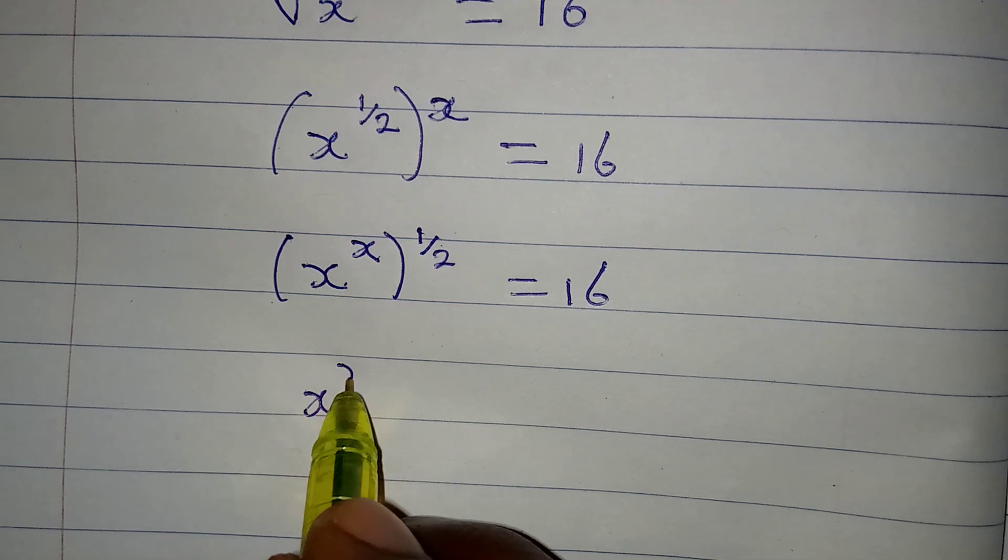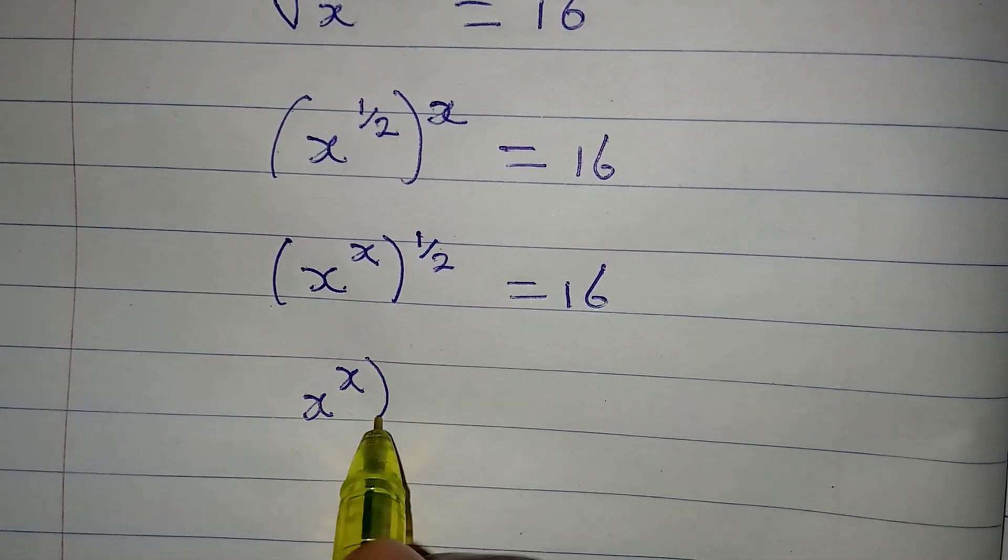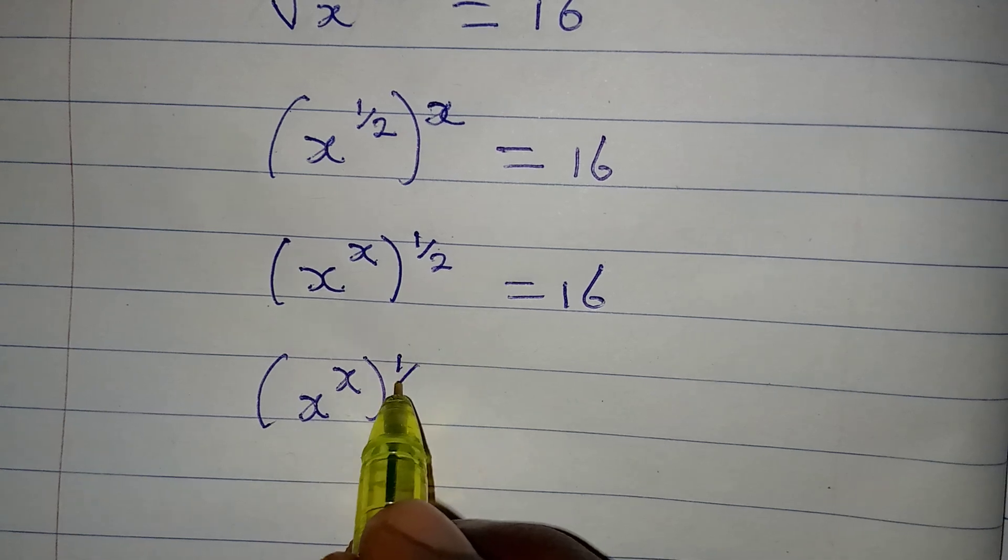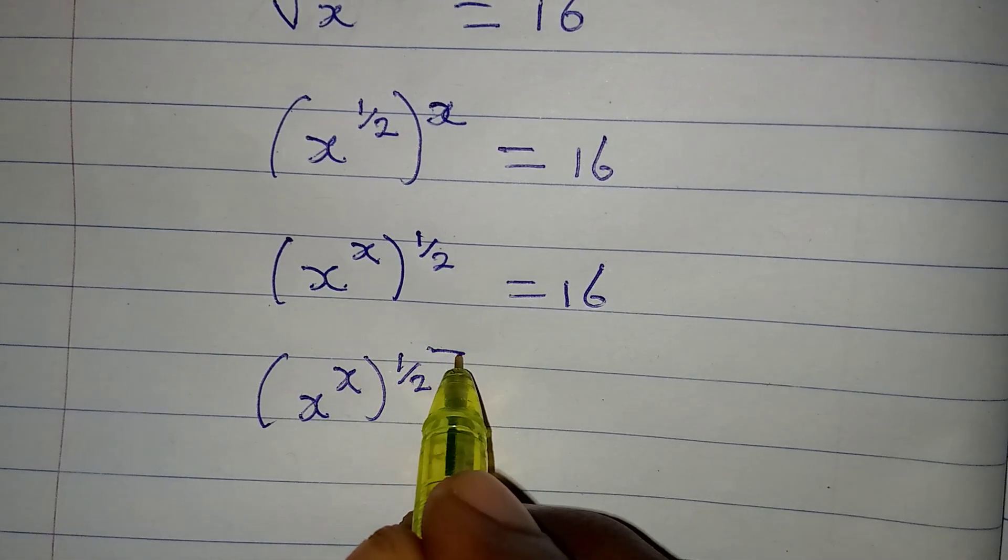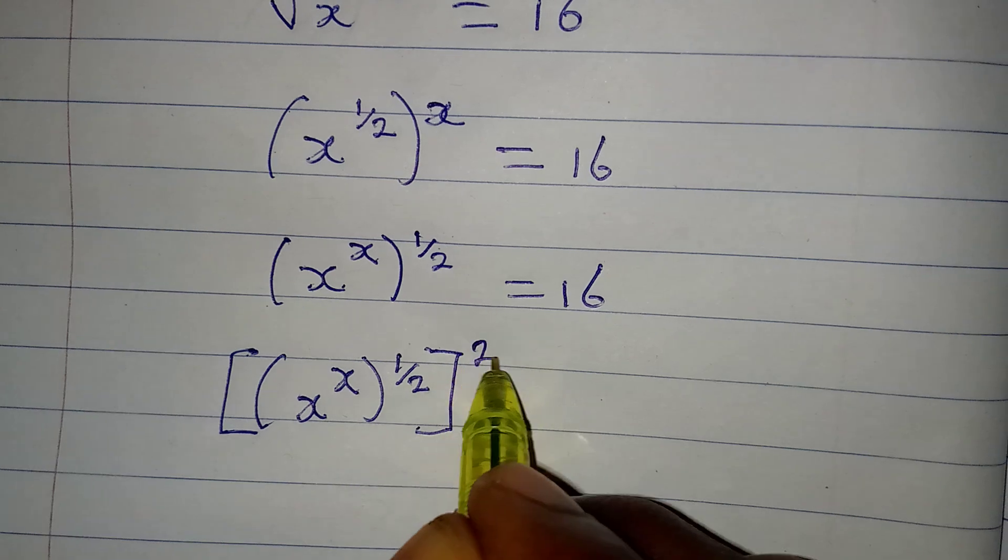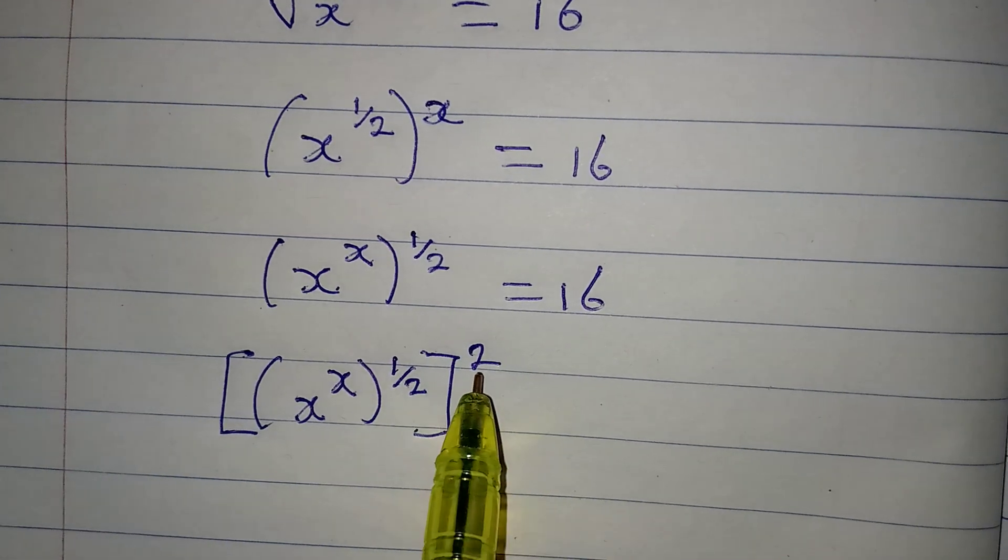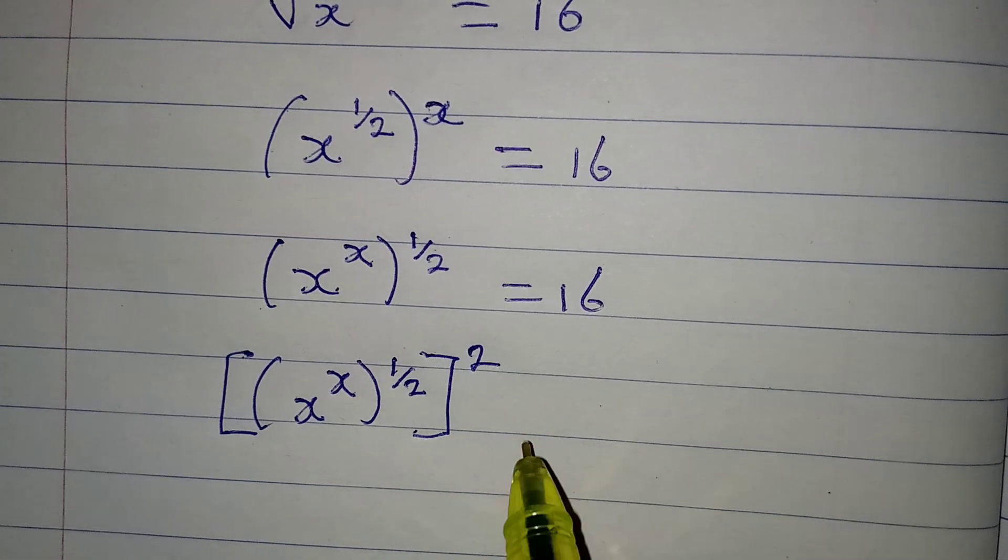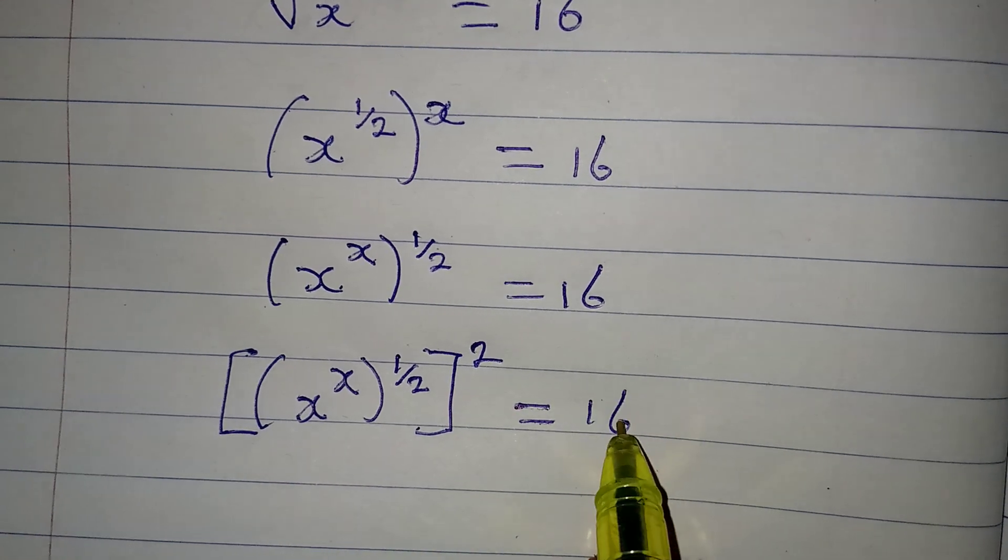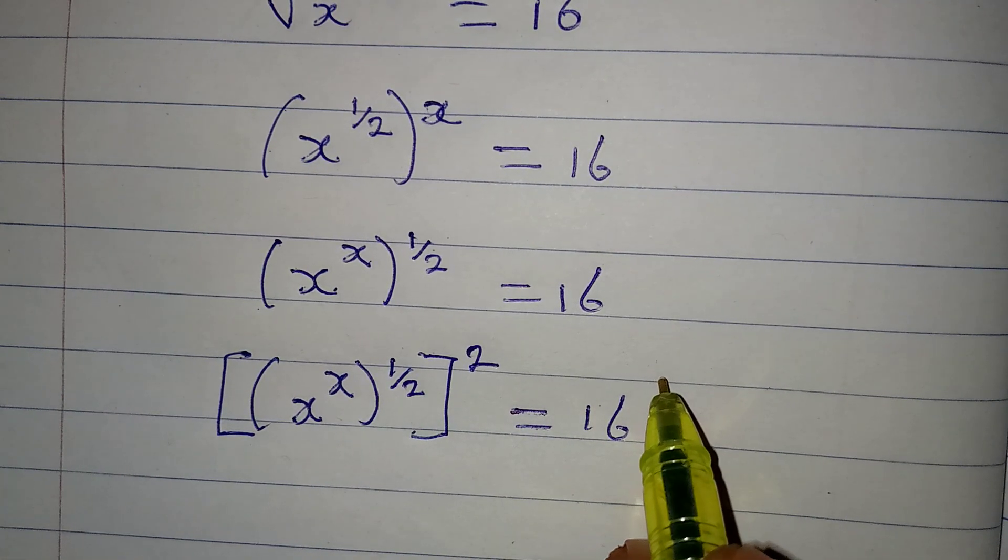Right, so we have x to the power of x to the power of 1/2, and then we will square everything. Now that we introduced this square, we have to introduce it on the other side right, so we get square here too.